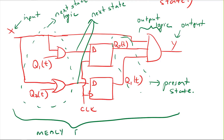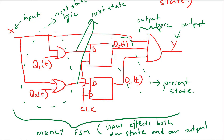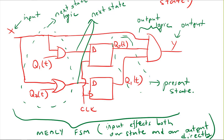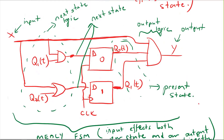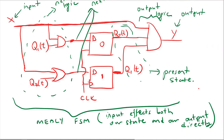What is the type of this finite state machine? This is a Mealy finite state machine because the input affects both the state and the output directly. If this line connecting the input to the output logic were not present, it would be a Moore finite state machine. Since the input also goes to the output logic, this is called a Mealy finite state machine.